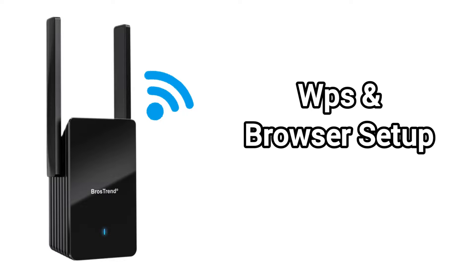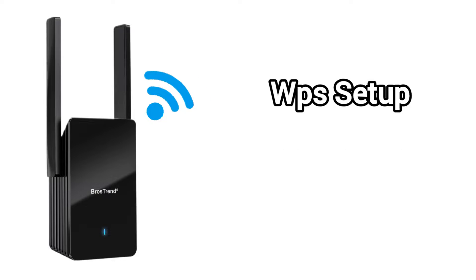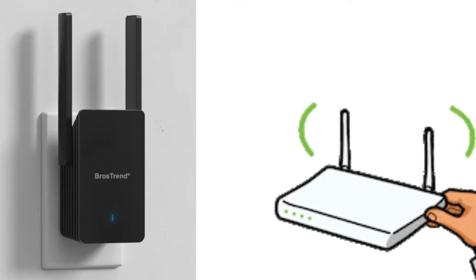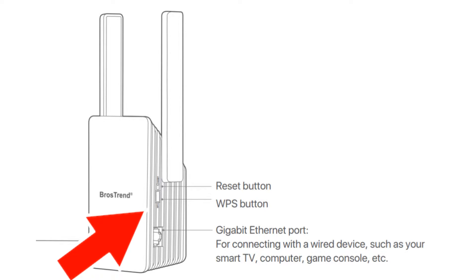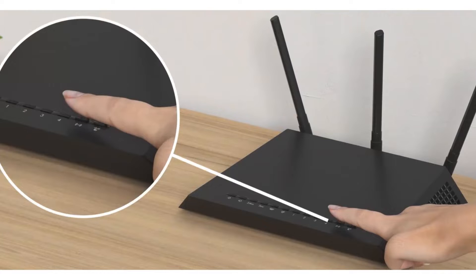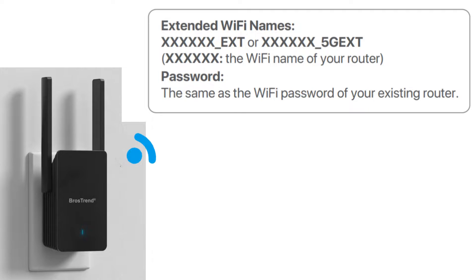Let's learn the WPS setup first. You will first have to plug the extender in the same room as your router and wait until the power LED starts blinking red, which usually takes around 60 seconds. After this, press the WPS button on the side of the extender for around two seconds. Next, press the WPS button on the router.